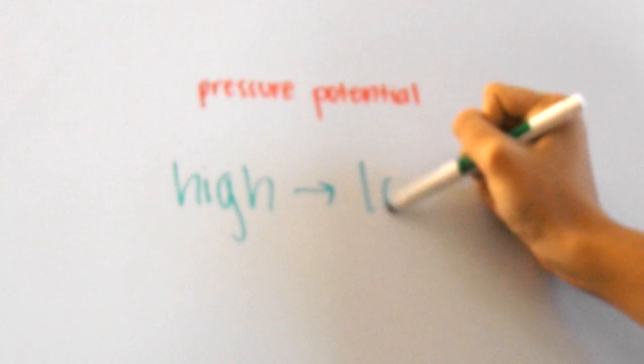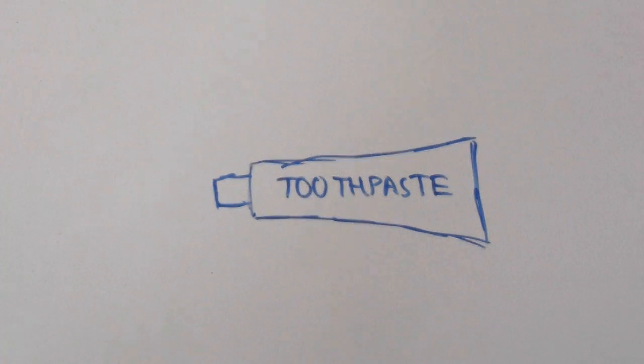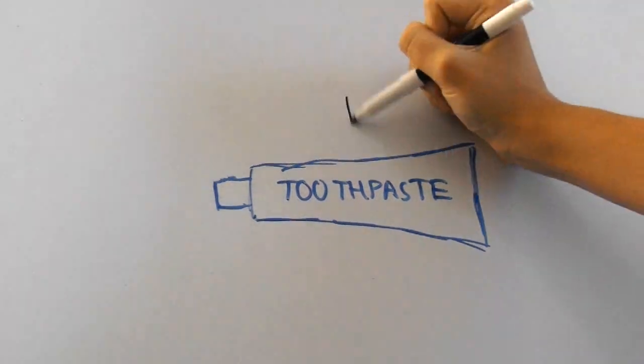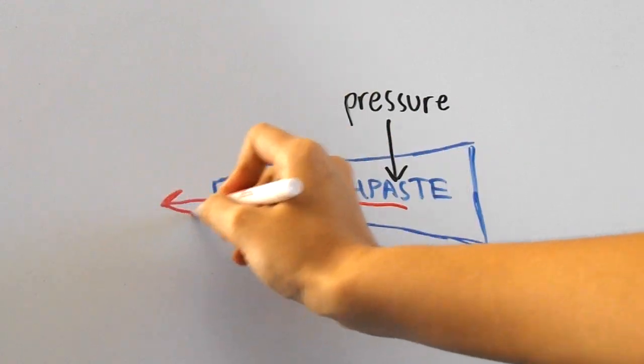Now on to pressure potential. Water always flows from areas of high pressure to low pressure. Think of it like squeezing a tube of toothpaste. When you apply pressure on one side of the tube, the toothpaste always goes in the opposite direction.